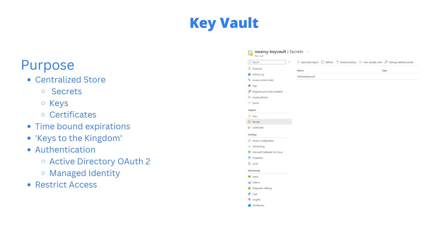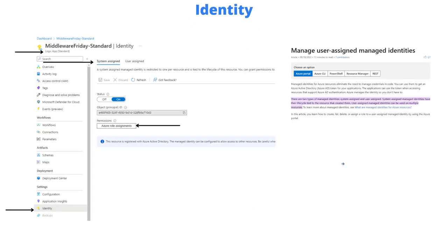Restricting access is obviously important. I'm not going to show it in this video but I may in an upcoming one — we could also connect this to a VNet so all traffic flows through it. I want to focus more on the managed identity side of things for this video, but putting a bubble around your Key Vault is not a bad idea either. Let's take a step-by-step look at what we'd do to enable an Azure Logic App Standard instance to connect to Key Vault using managed identity.